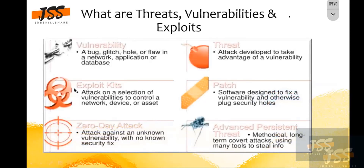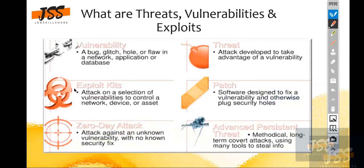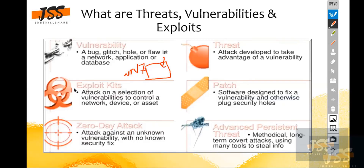These are different kinds of threats, vulnerabilities, and exploits — I put this slide so you have a better idea. A vulnerability is a bug, a glitch, a hole, or flaw in any network application. For example, with Windows 7, when developers developed the program, maybe they left some very important configuration incomplete — that is a vulnerability. Attackers have a good understanding of these bugs and can use them.